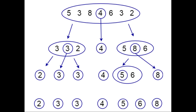Now, each and every element will be compared with the pivot element. Here, four is the pivot element. Five will be compared with four — it is greater, so it will be placed on the right side of the pivot element. Then three will be compared — it is lesser, so it will be placed on the left side.